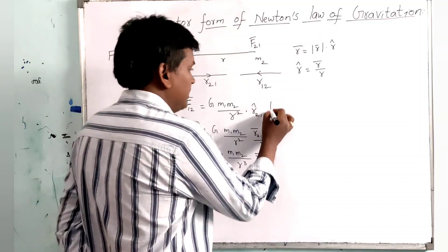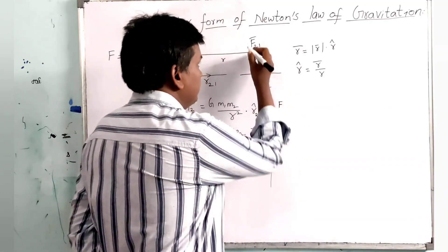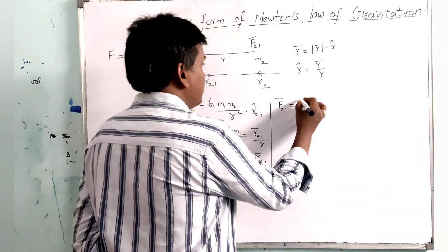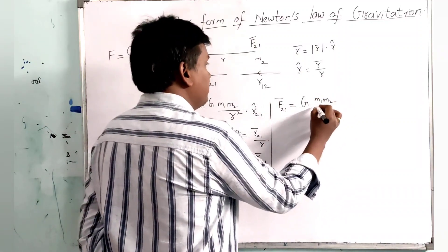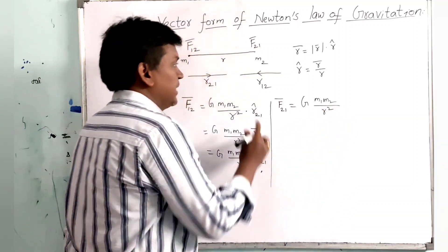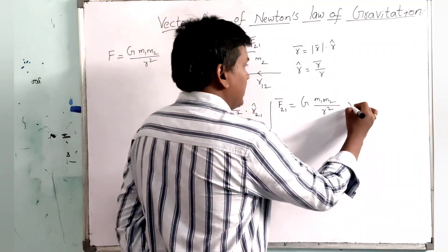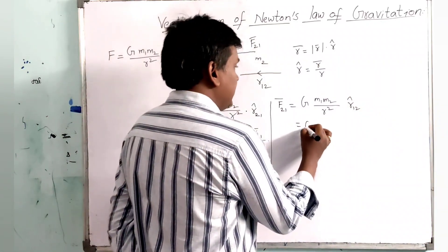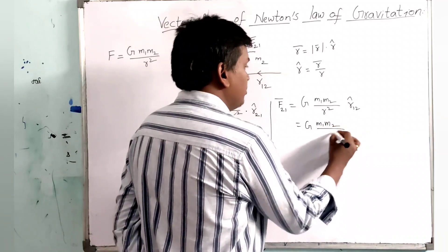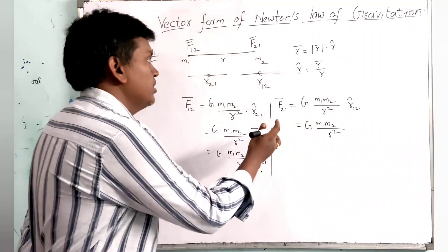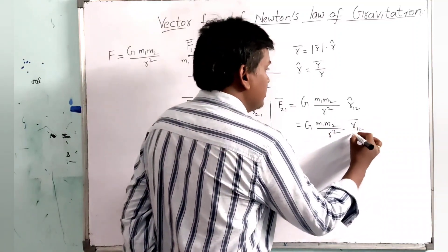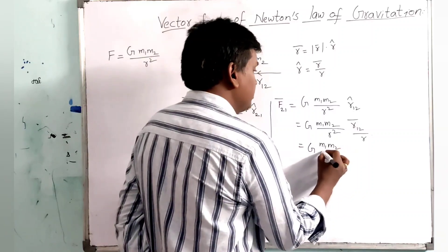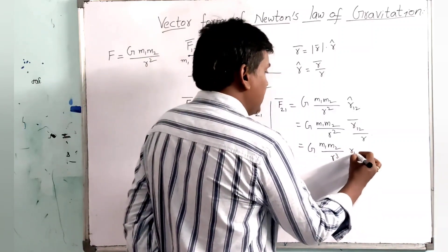In the same way, for mass M2, F bar 21 equals G M1 M2 by R square, and the direction is R cap 1,2. This can be written as G M1 M2 upon R square, and substituting R cap 1,2 as R bar 1,2 divided by R, we get G M1 M2 upon R cubed, times R bar 1,2.